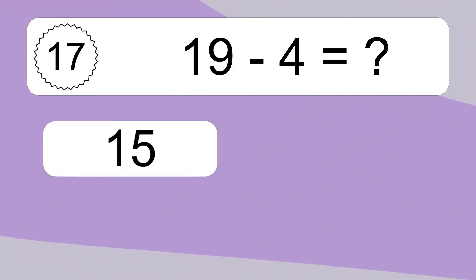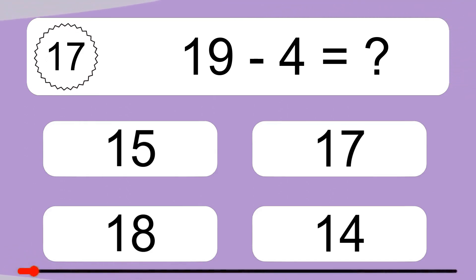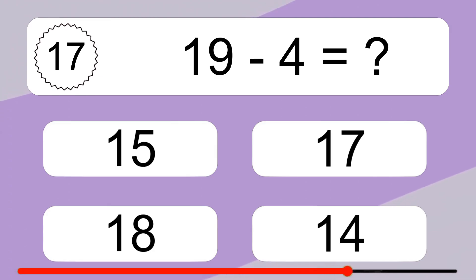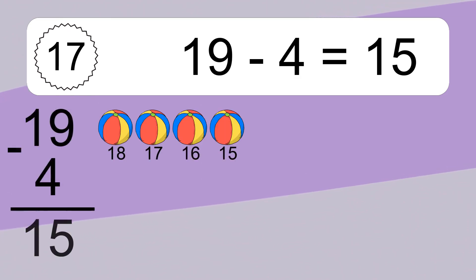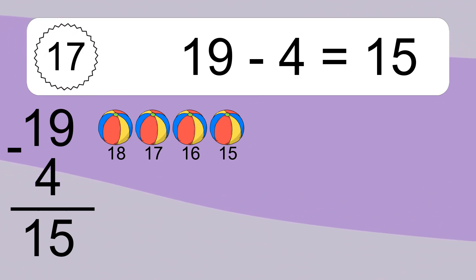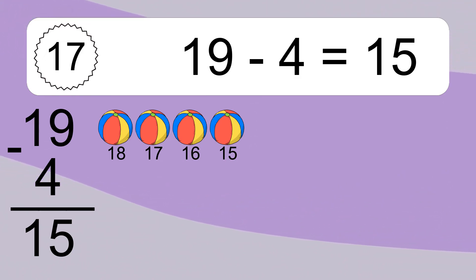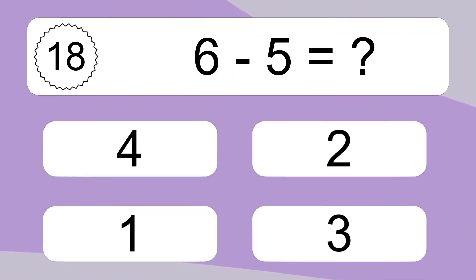19 minus 4 equals what? 19 minus 4 equals 15. Let's count it: 18, 17, 16, 15.